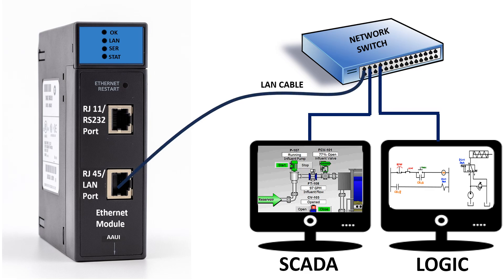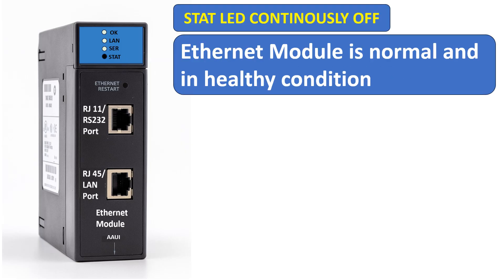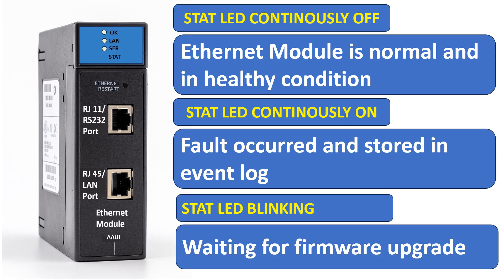The purpose of the LAN RJ45 port is to exchange data through the LAN network for SCADA and engineering systems. The STAT LED indicates the specific state of this Ethernet module related to its configuration and operation. If the STAT LED is off, the module is in normal, healthy condition. If it is on, a fault has occurred and is stored in the event log. If it starts blinking, the module is waiting for new software to be downloaded.